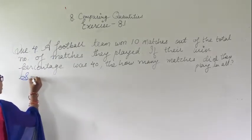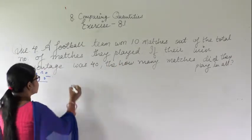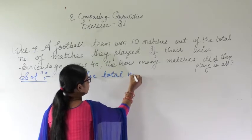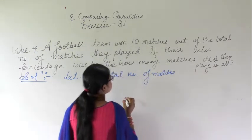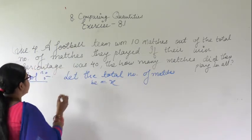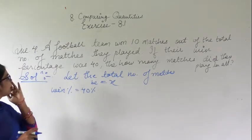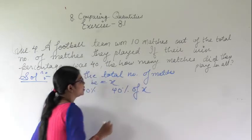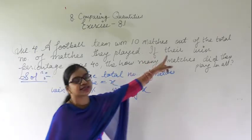So first we will start with: let the total number of matches be x. Now what is given? Win percentage is given as 40%. So if I take out 40% of x — out of x, 40% is given and that is the winning percentage.